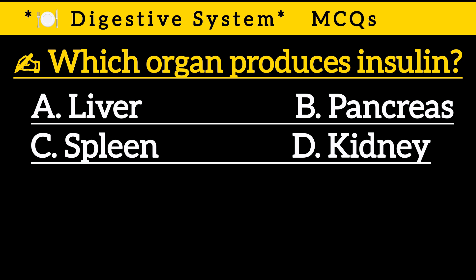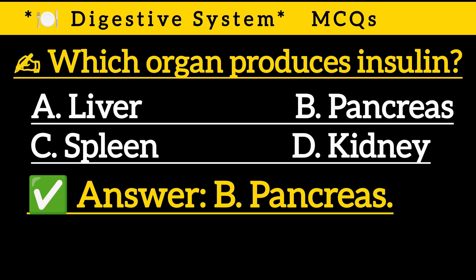Question 10: Which organ produces insulin? — Option A: Liver, Option B: Pancreas, Option C: Spleen, Option D: Kidney. Correct answer is Option B: Pancreas.